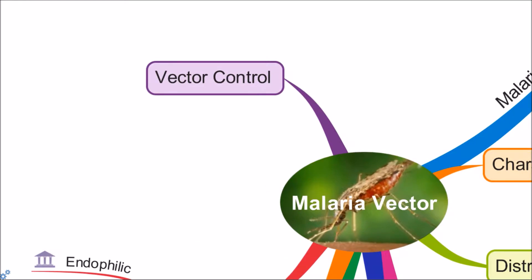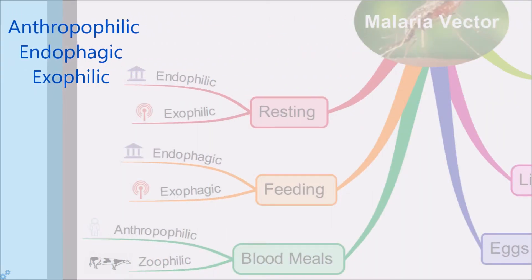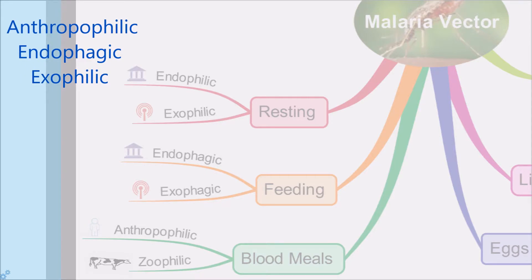Before we talk about vector control, let's take an example. If the textbook describes a mosquito as anthropophilic, endophilic, and exophilic, what does that mean? First, anthropophilic means the mosquito takes the blood meal from human beings.